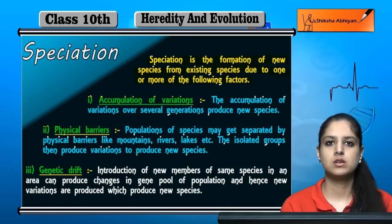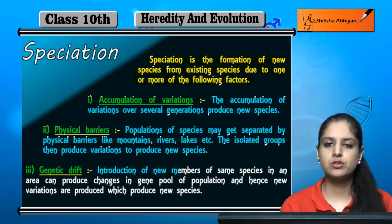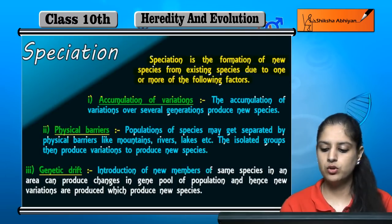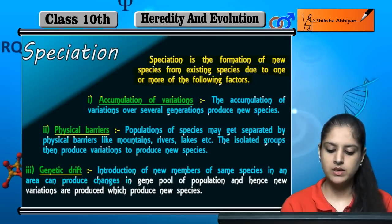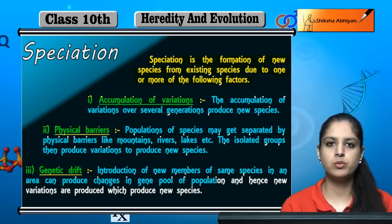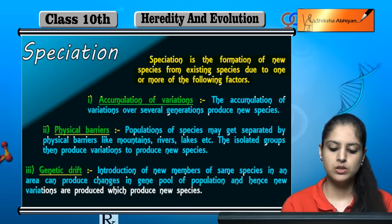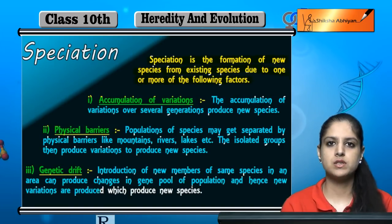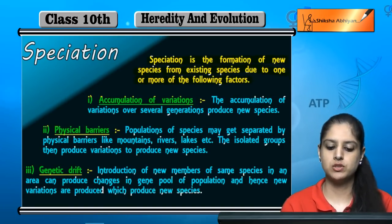Next is genetic drift. Genetic drift is the introduction of new members of the same species into an area. It can produce changes in the gene pool of a population, and hence new variations are produced which lead to new species.